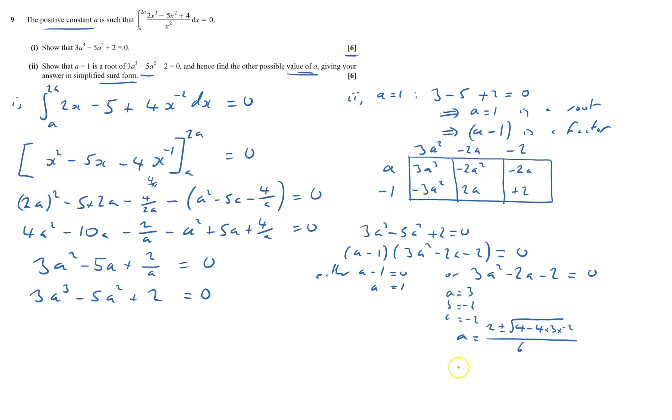All over 2a, which is 6. So a equals 2 plus or minus 4, take away, well it's plus isn't it, because minus times minus is plus, 3 times 2 is 6, times 4 is 24, 4 plus 24 is 28, so that's root 28 over 6, which equals 2 plus or minus the square root of 4 times 7, all over 6, so a equals 2 plus or minus 2 root 7 over 6, which equals 1 plus or minus root 7 over 3.